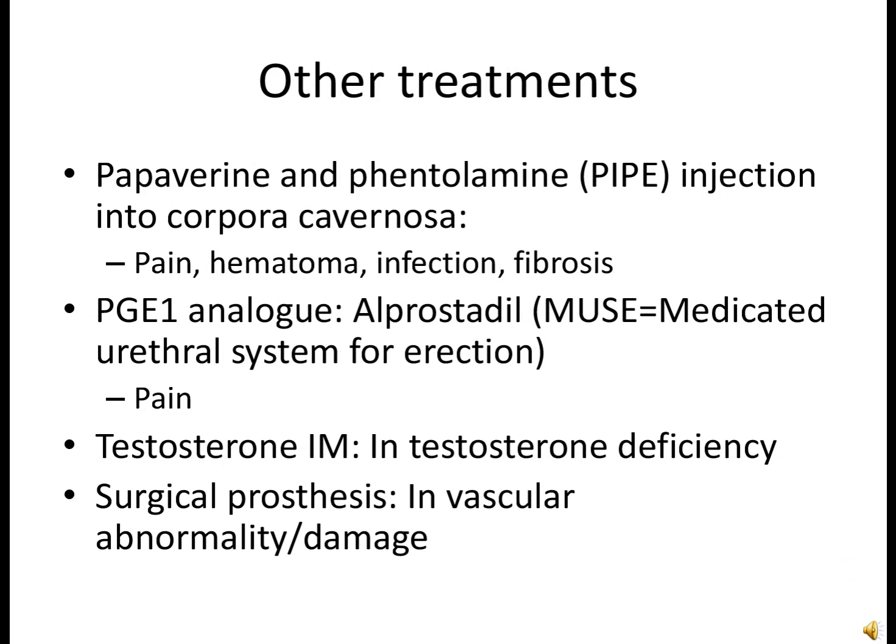The third treatment is testosterone intramuscular injection, if there is actual testosterone deficiency. If the vessels and nerves — which are prerequisites for erection — are already damaged, then all previous treatments may not be helpful. In that condition, surgical prosthesis is required to help achieve erection for sexual intercourse.